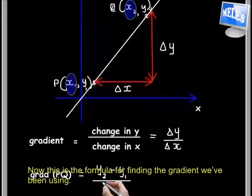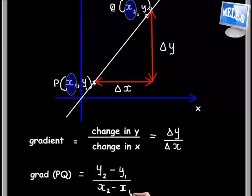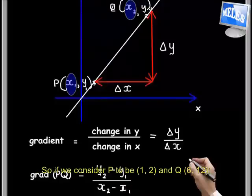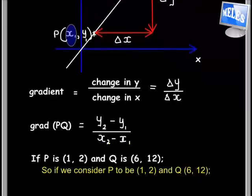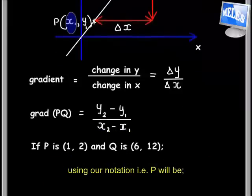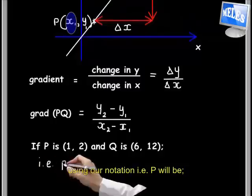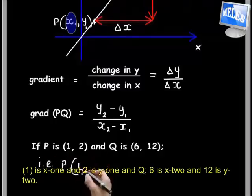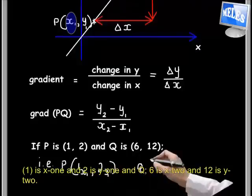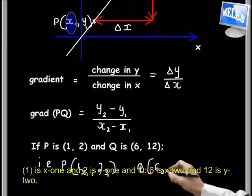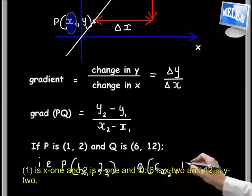Now this is the formula for finding the gradient we have been using. So if we consider P to be (1, 2) and Q to be (6, 12), using our notation, i.e., P will be (x1, y1) where 1 is x1 and 2 is y1, and Q will be (x2, y2) where 6 is x2 and 12 is y2.